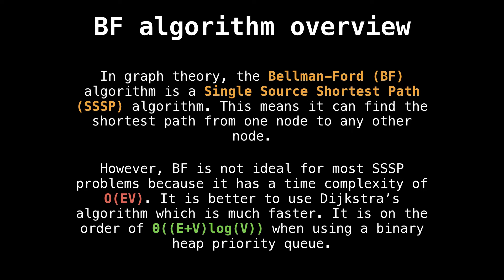So what is the Bellman-Ford algorithm? In short, it's a single source shortest path algorithm. This means that it can find the shortest path from a starting node to all other nodes in the graph. As you can imagine, this is very useful.